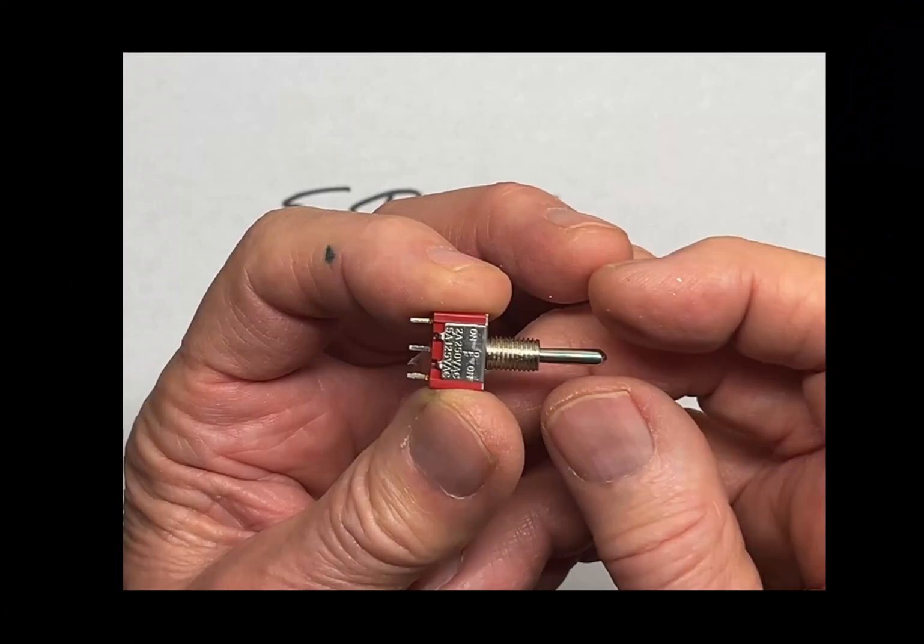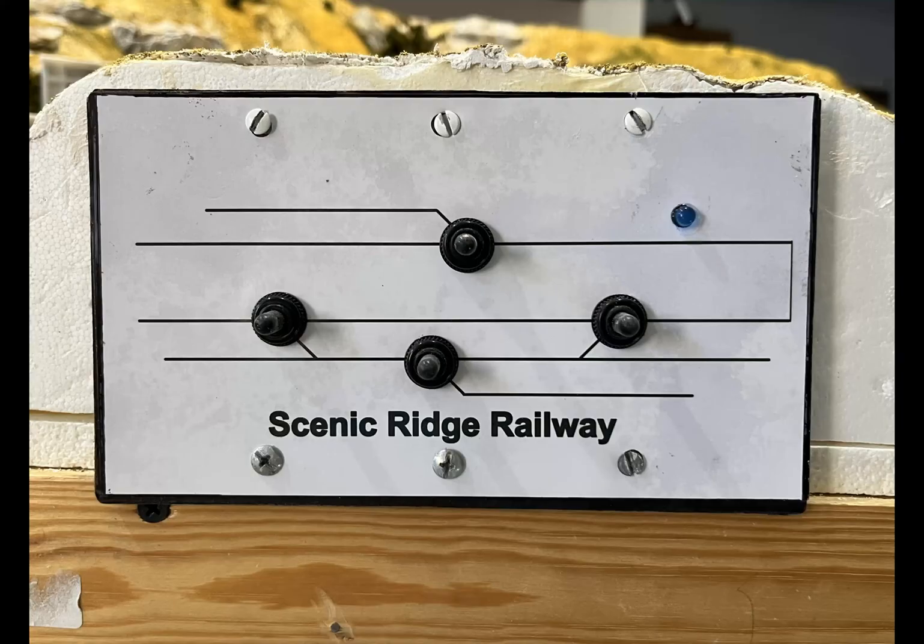Lately I've gone to these small momentary contact single pole double throw switches which you can buy on Amazon. I've used these to replace the less reliable Atlas switch control unit. And this is what my switch control board looks like with these momentary contact switches. They came with these rubber covers which I went ahead and used although they weren't necessary.